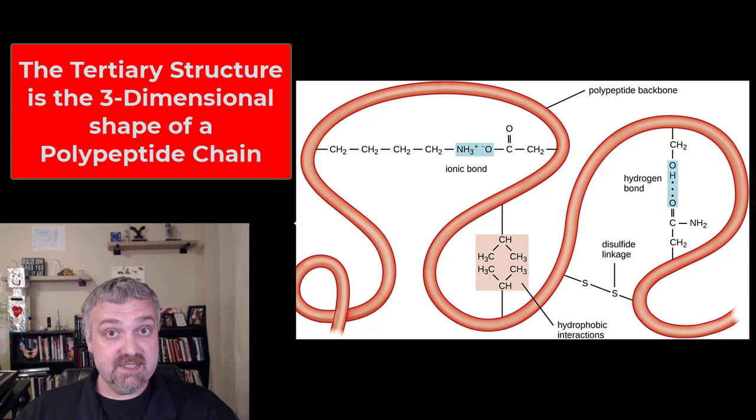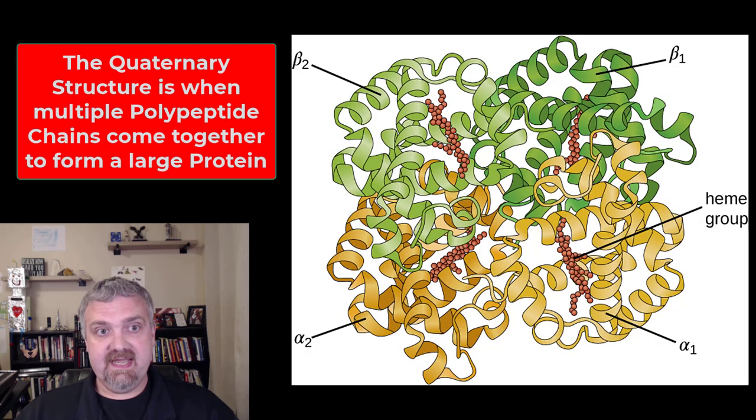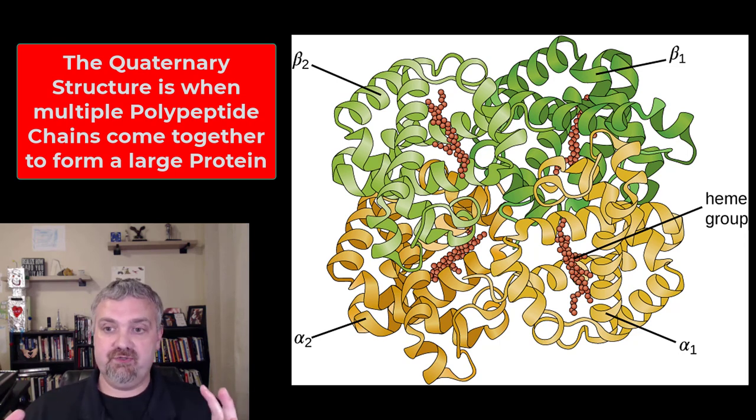So primary structure: sequence of amino acids. Secondary structure: local changes in shape. Tertiary structure: the three-dimensional shape of a protein. Now not all proteins have this, but the quaternary structure is when you put more than one polypeptide chain together to form a larger structure. The quaternary structure here—this is hemoglobin. Notice that there are four protein chains put together that fuse to form hemoglobin. That's the quaternary structure.